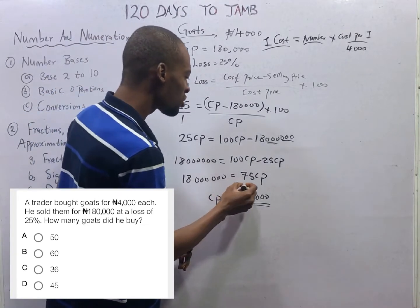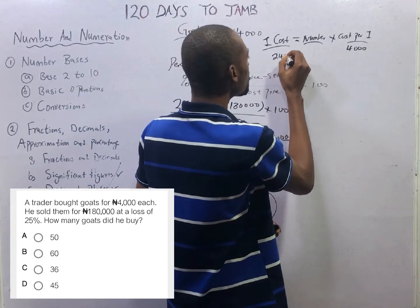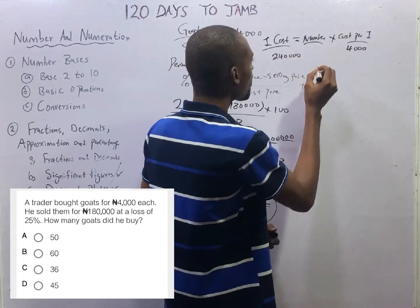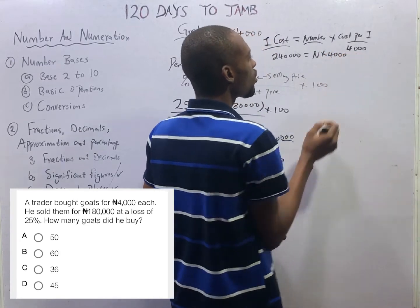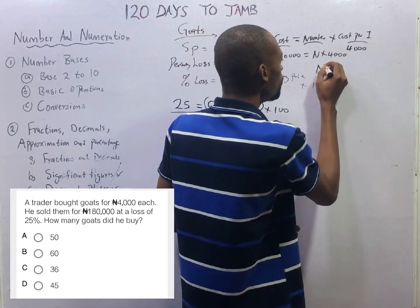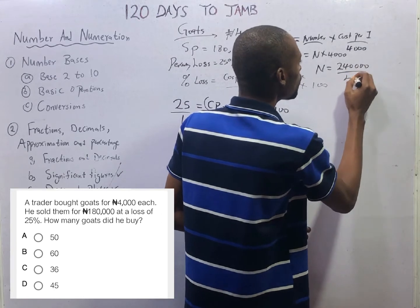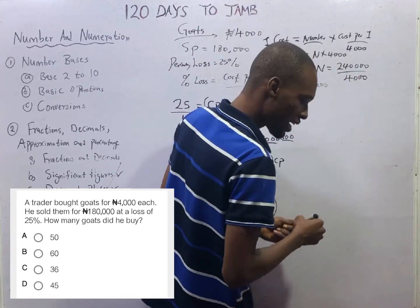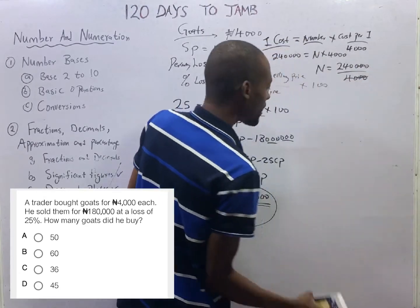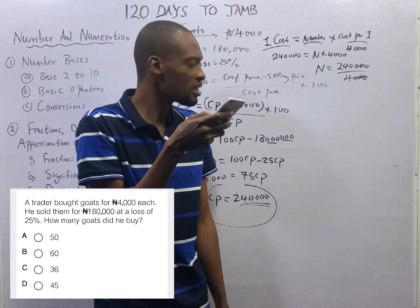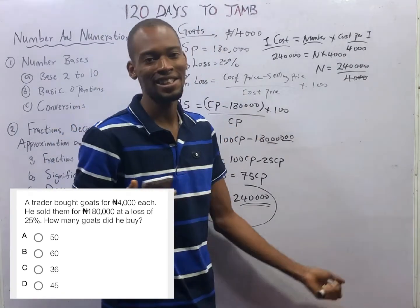Now that we know the total cost price, it is sweet for us to say: total cost price of 240,000 naira equals number of goods times 4,000 naira per one. So, the number of goods equals 240,000 divided by 4,000, which is 240 divided by 4. Ladies and gentlemen, the number of goats is 60 goats. That is the answer to this question.